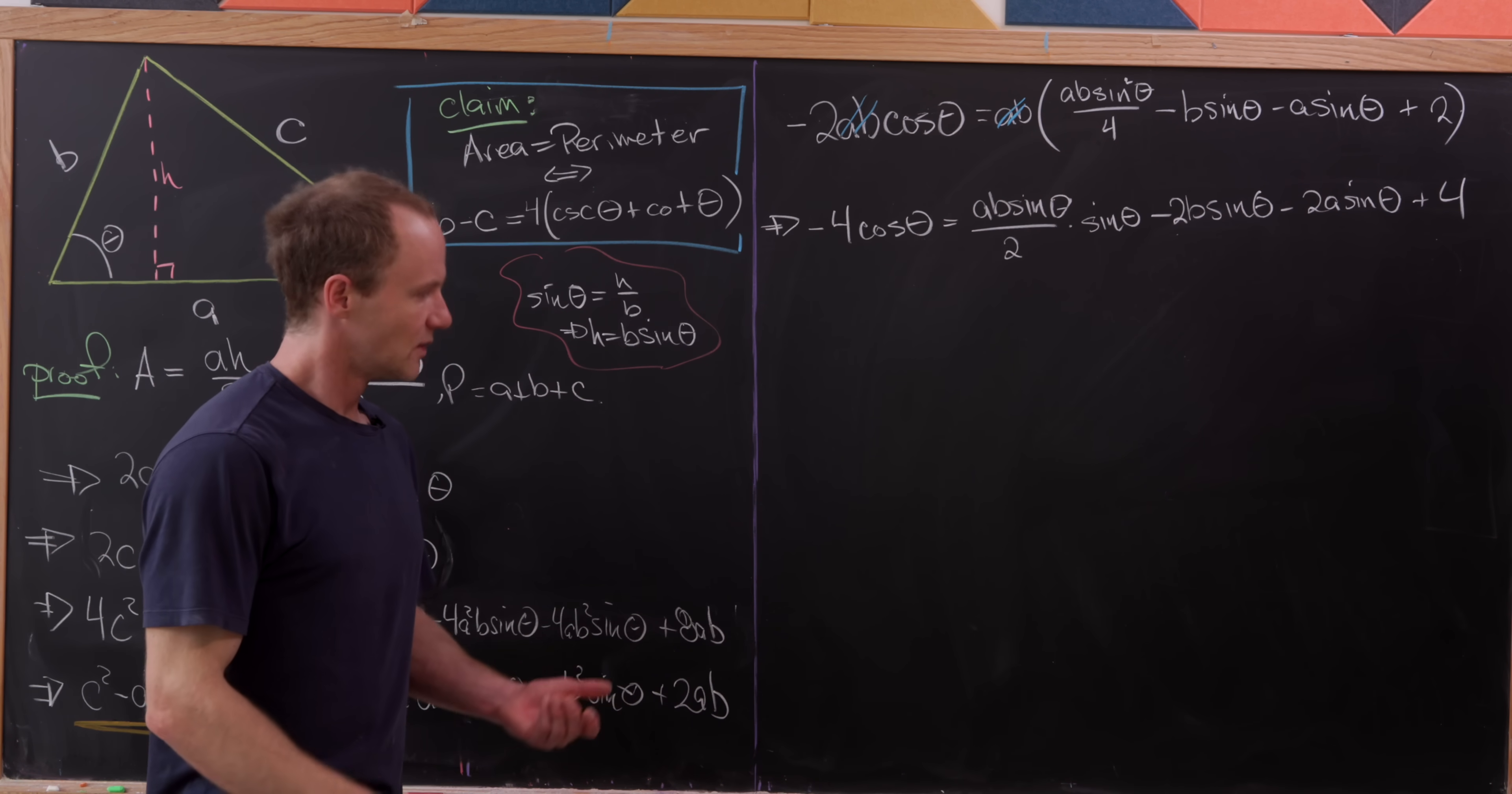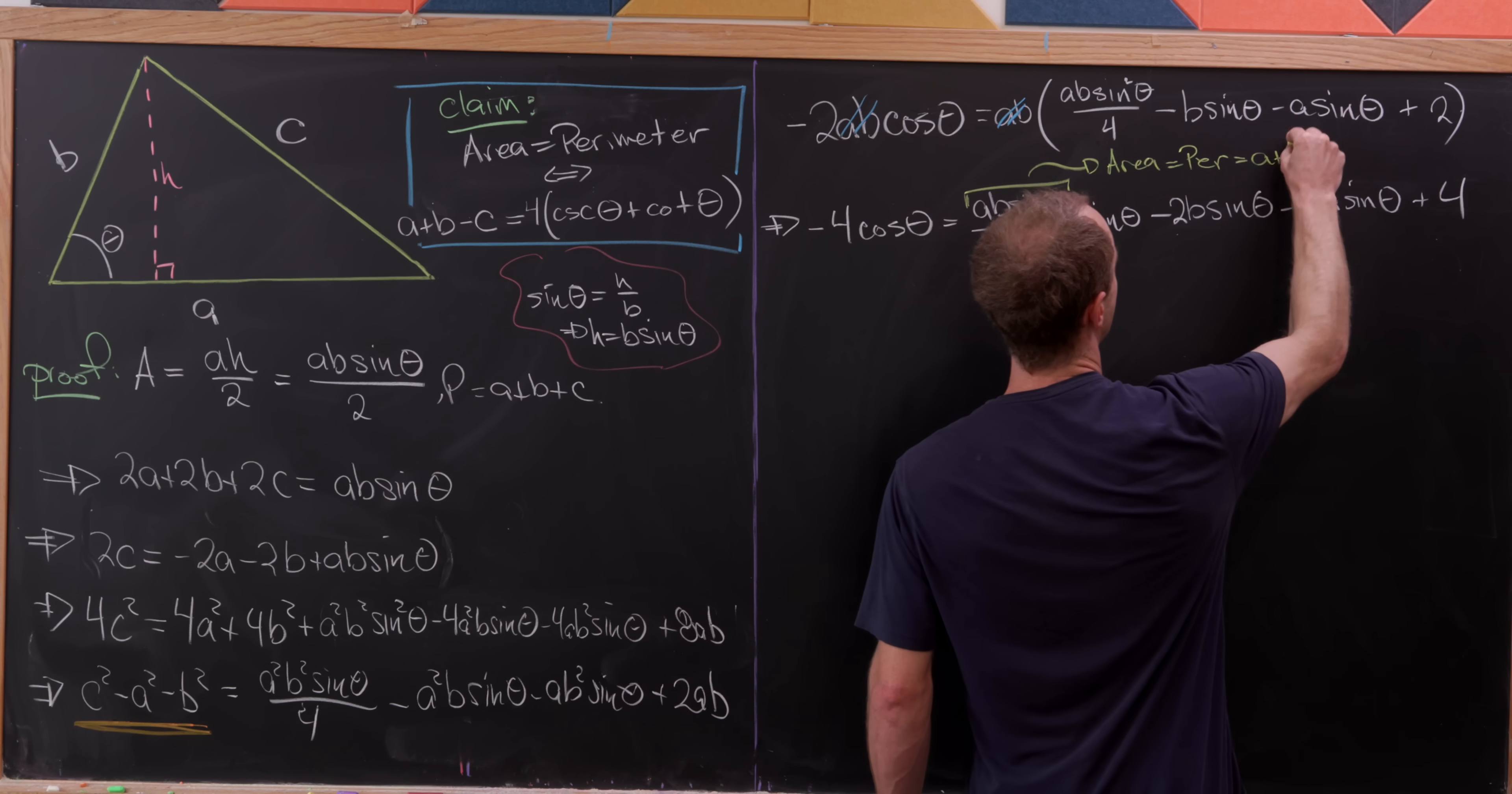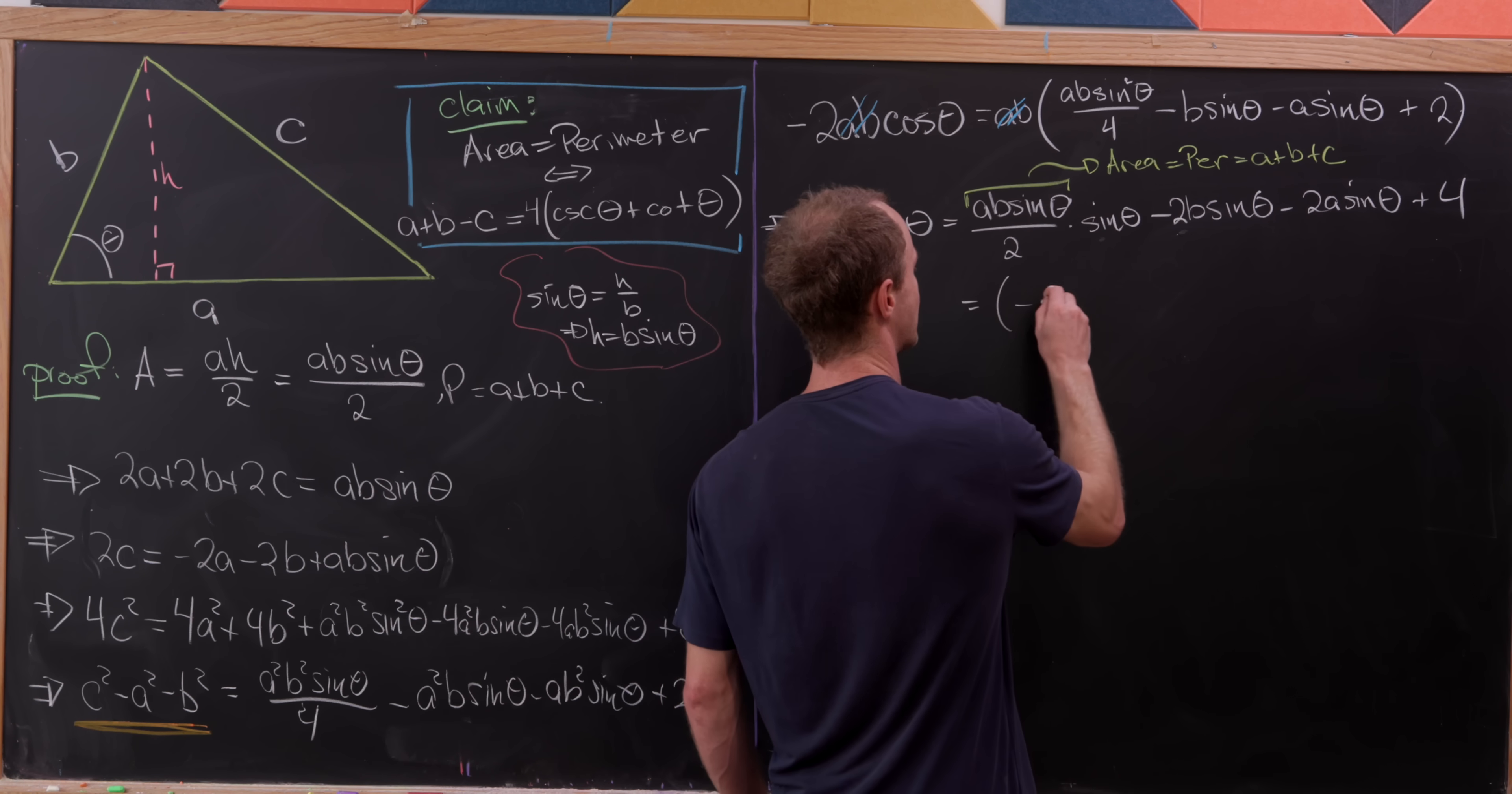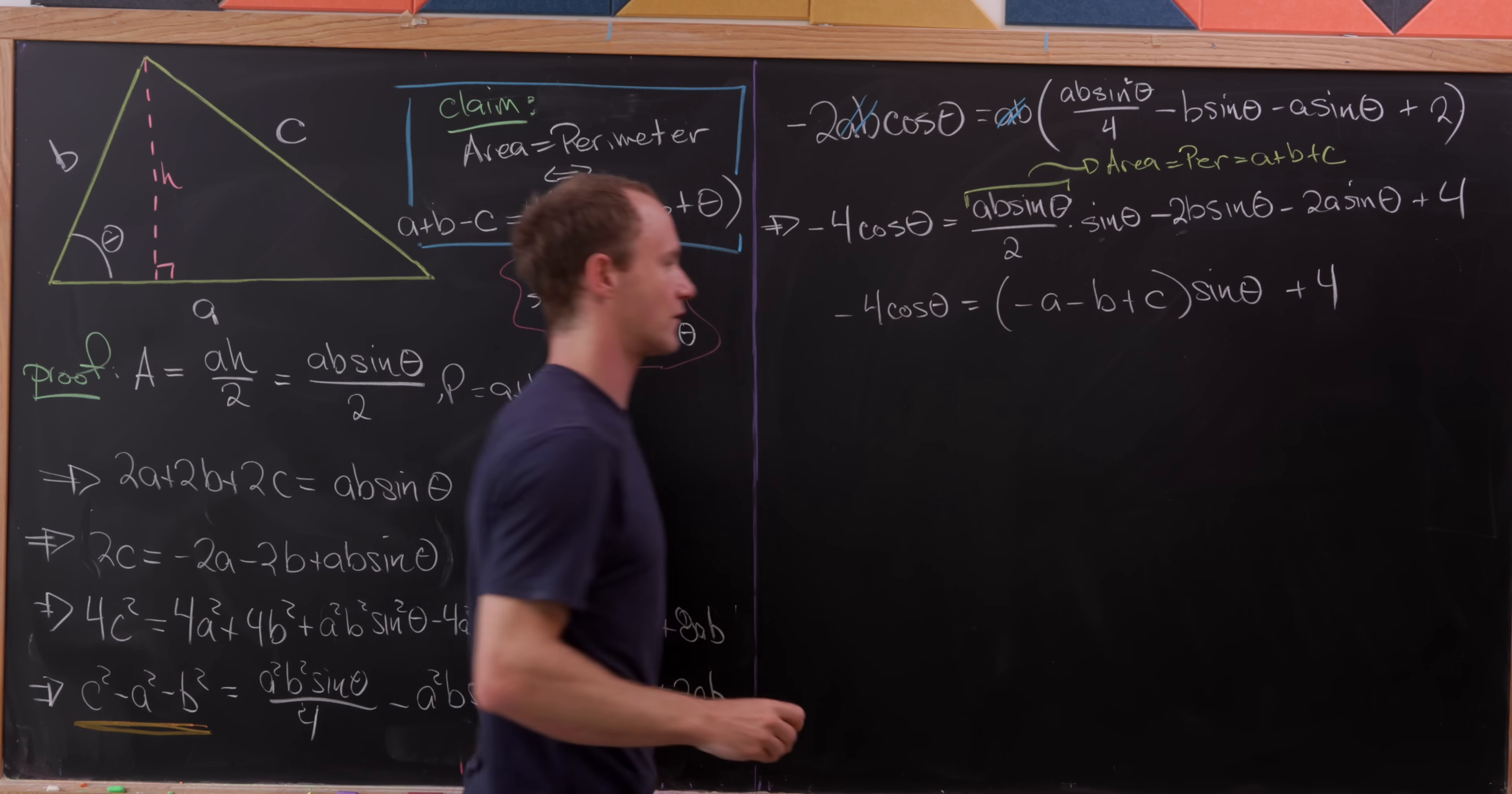Okay, great. But now let's look carefully at what we have and observe that this object right here is exactly equal to the area, which is equal to the perimeter, which is equal to a plus b plus c, by our given. So now we have a plus b plus c times sine minus 2b times sine minus 2a times sine. So in the end, we're going to have minus a minus b plus c times the sine of theta plus 4 over here on the left, and we have minus 4 cosine theta over here on the right.